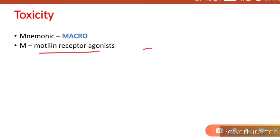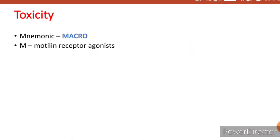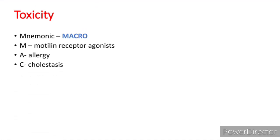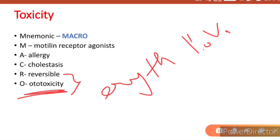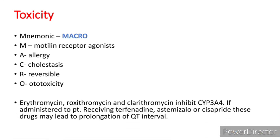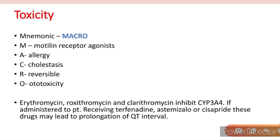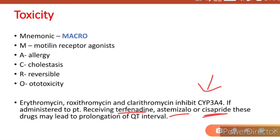The toxicity/side effects of macrolides — the mnemonic is MACRO, quite easy to remember. M: motilin receptor agonist, which means it causes diarrhea; GIT-related side effects are more common with macrolides. A: allergy. C: cholestasis. R: reversible ototoxicity — seen with erythromycin IV dose. O: erythromycin, roxithromycin, and clarithromycin inhibit CYP3A4. If administered to a patient already receiving terfenadine, astemizole, or cisapride, these drugs may lead to prolongation of the QT interval.